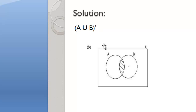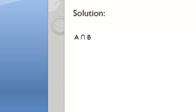Part B. This is the diagram in Part B. If you notice, the lined region is the section of the set that is common to both. The solution for Part B is A intersect B.